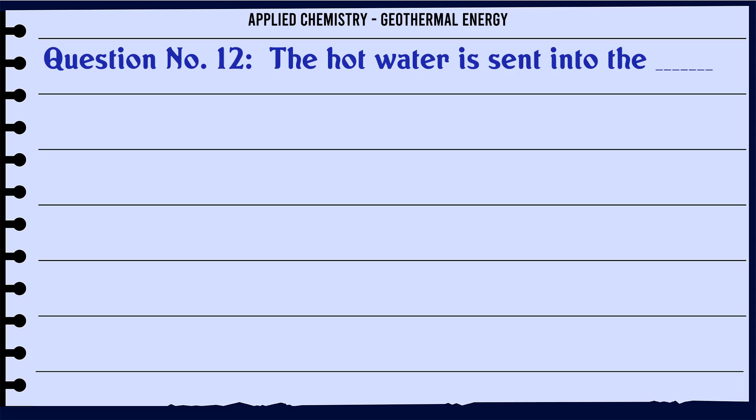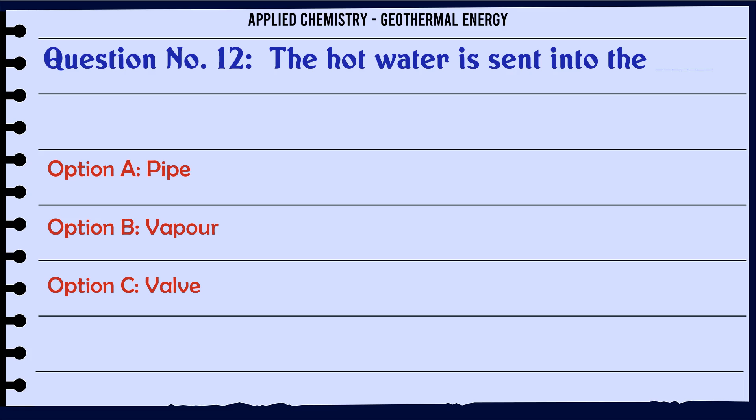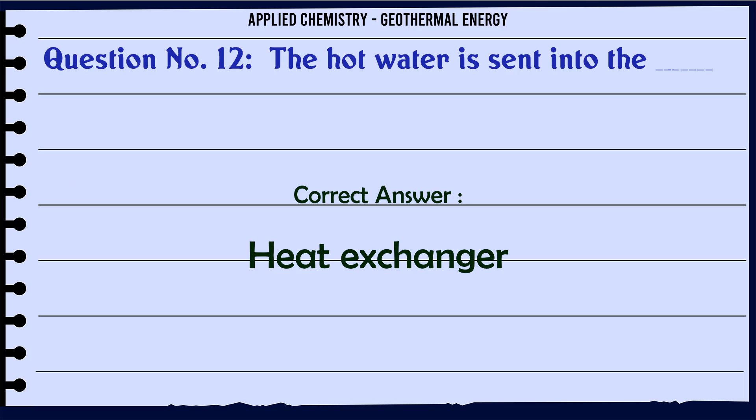The hot water is sent into the: A: Pipe, B: Vapor, C: Valve, D: Heat exchanger. The correct answer is heat exchanger.